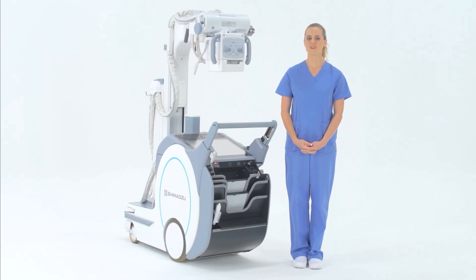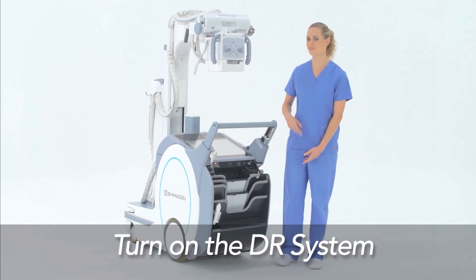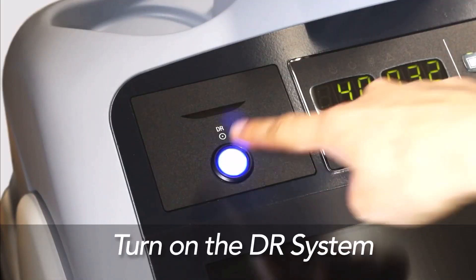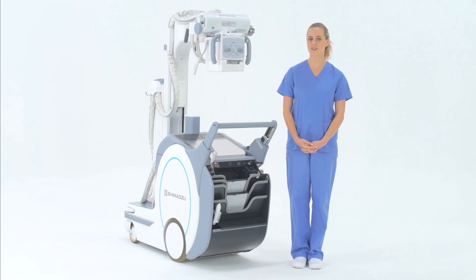The touch panel monitor for the digital radiographic system is located on the base. Turn on the DR system by pressing the large blue button to the top left of the display screen. Then turn on the DR panel by pushing the power button located on the side.